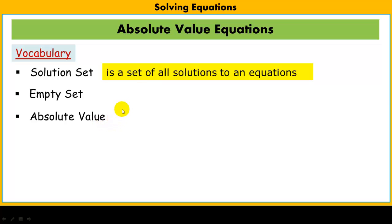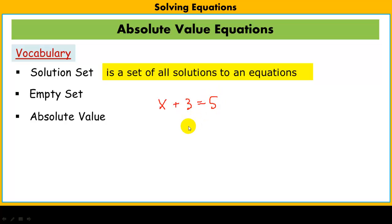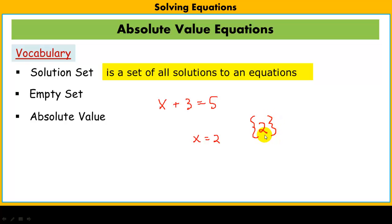A solution set is a set of all solutions to an equation. For the simplest of examples, x plus 3 equals 5. The solution is the value of x that would make the equation true, and in this case we all know that x equals 2. It can be written with these brackets — that's just saying the solution is 2.